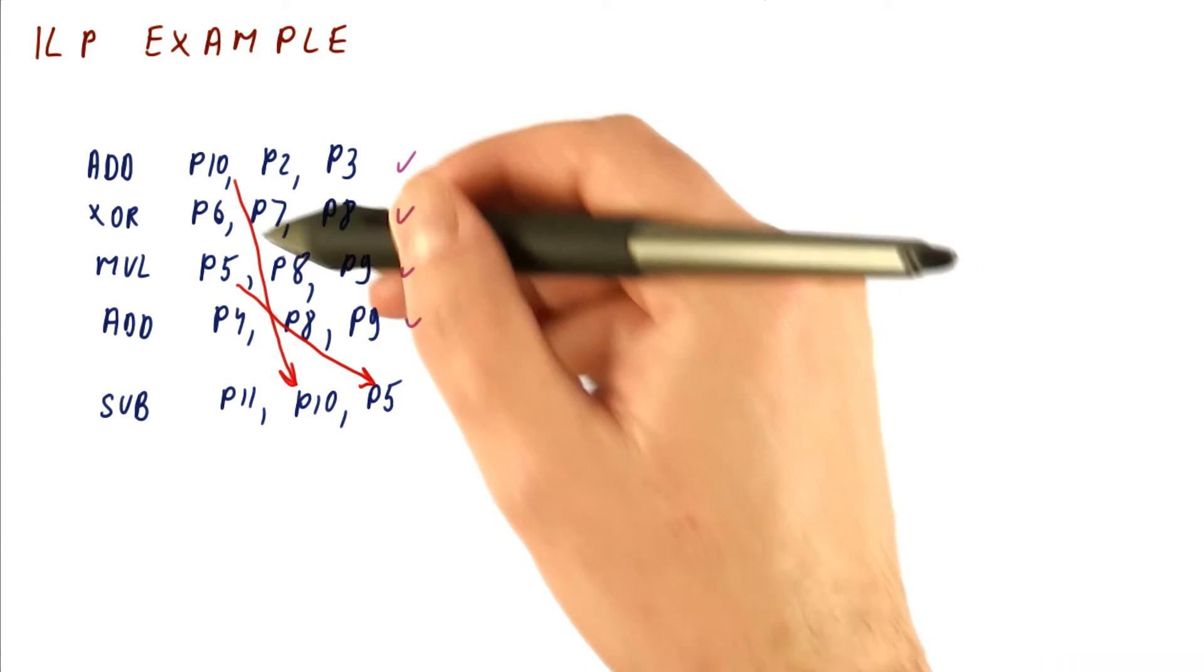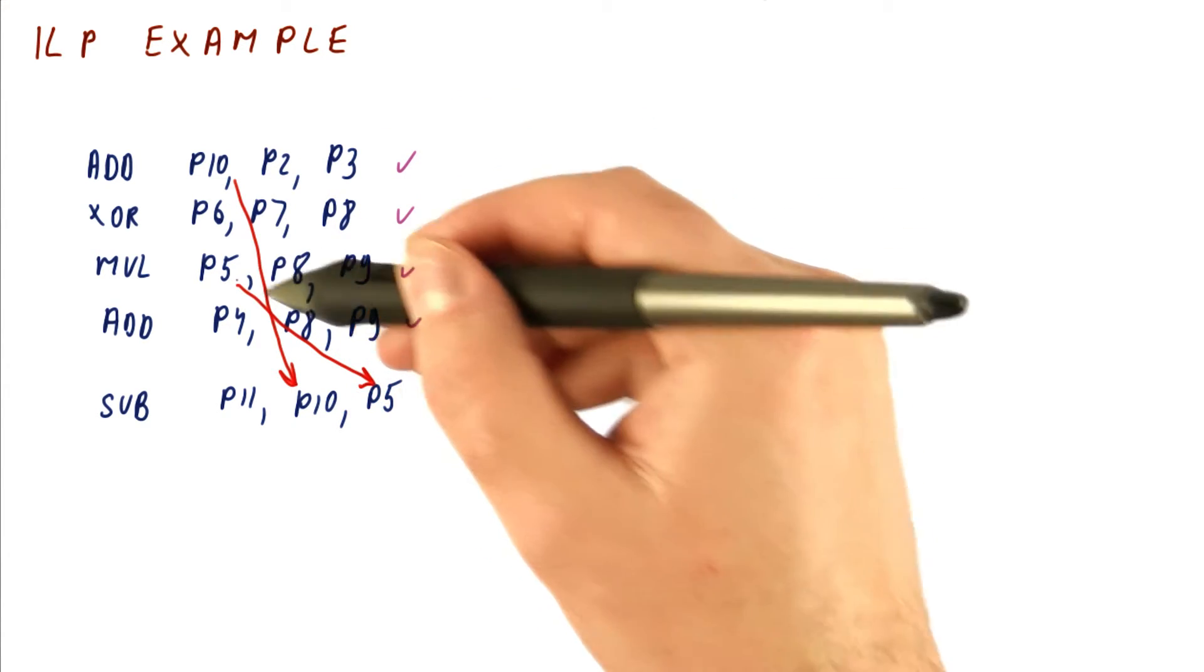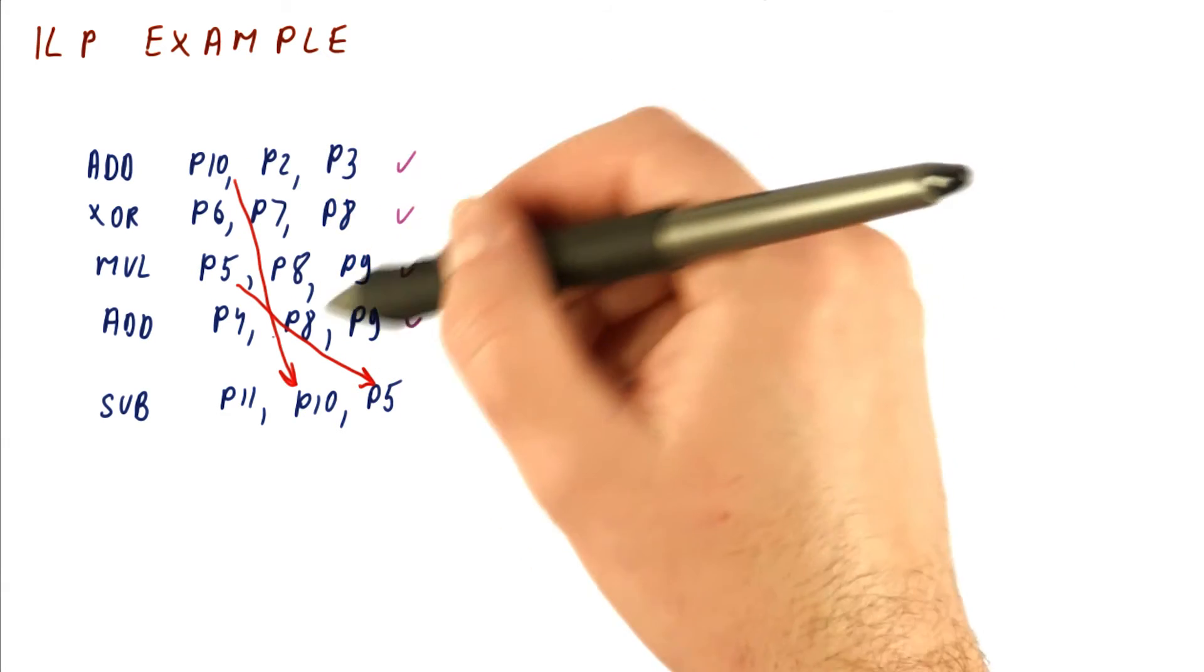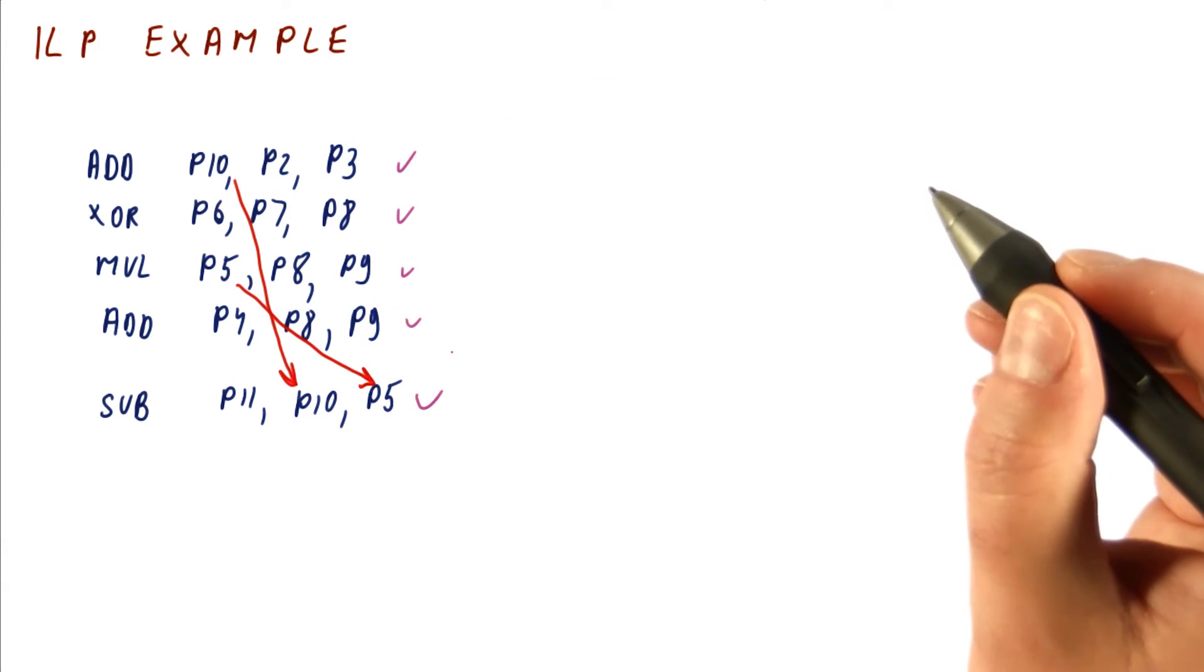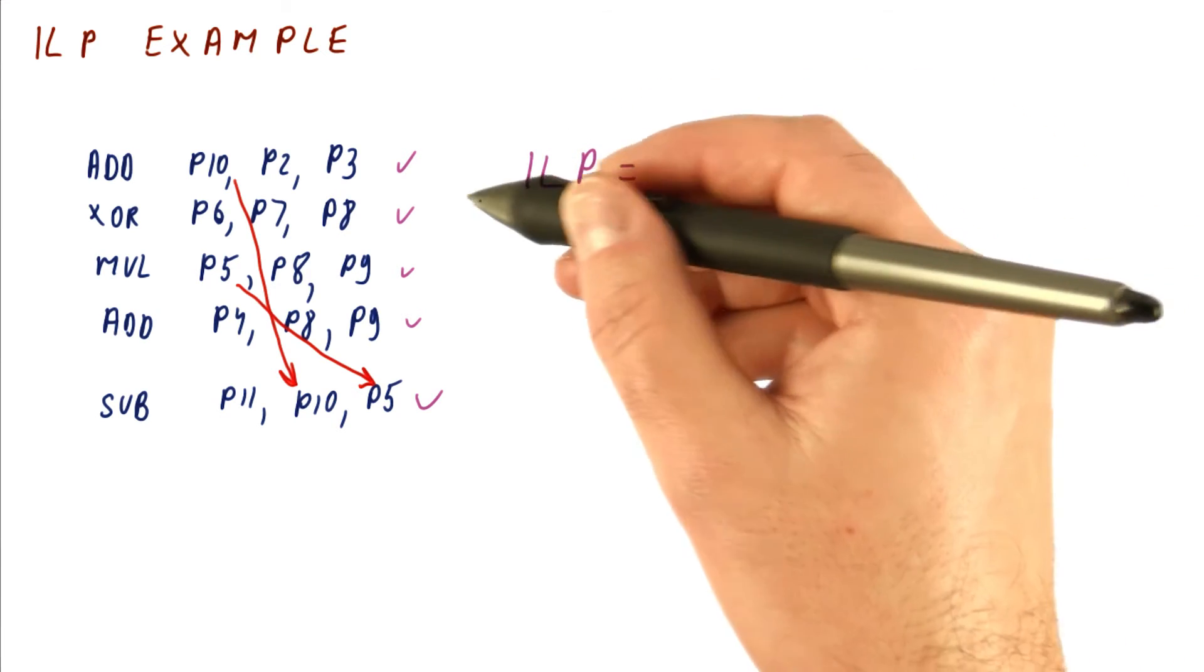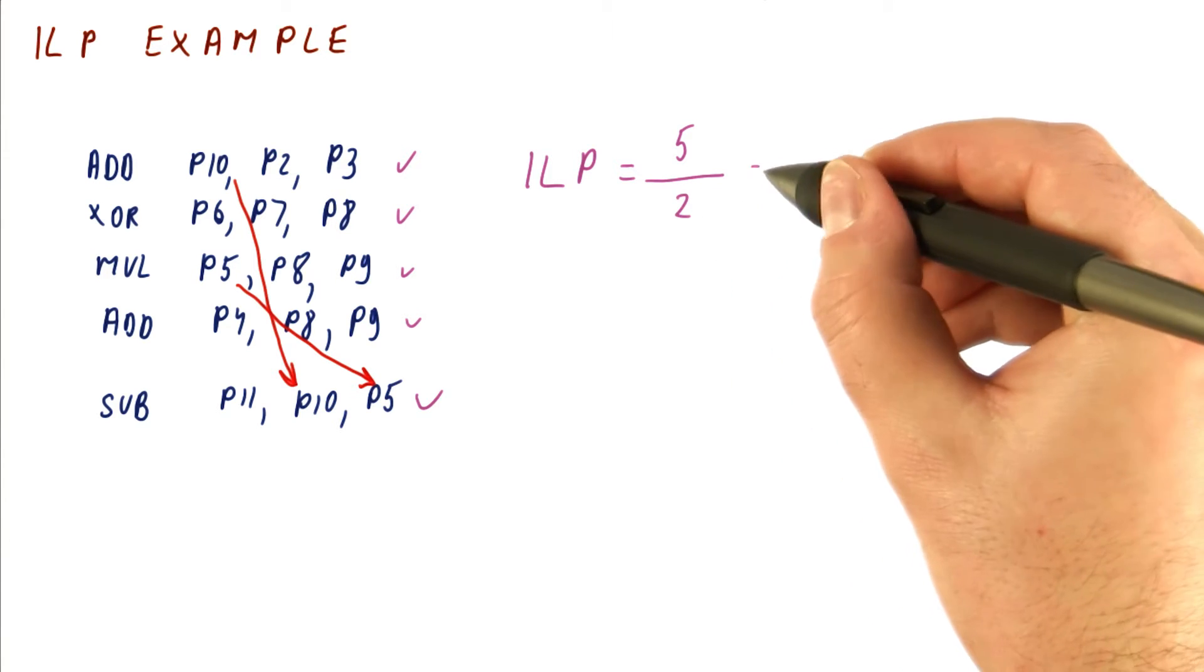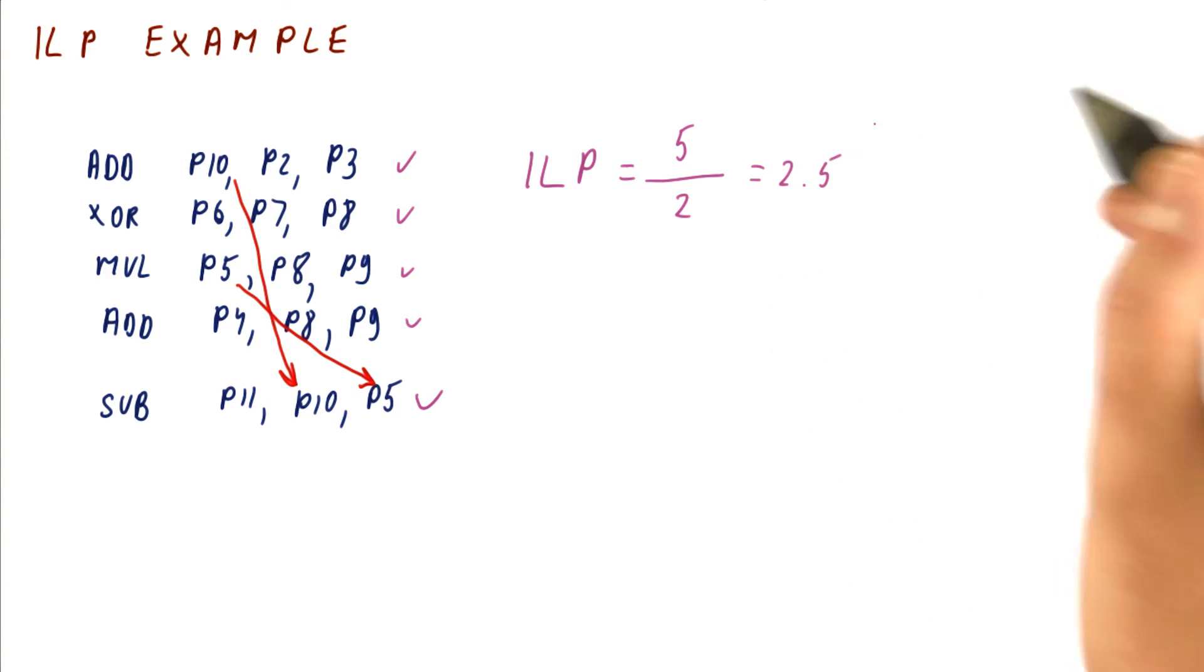In the second cycle, this one cannot be done in the first cycle because it has a dependence from this and this, and that hasn't been done in the first cycle yet. So after the first cycle, all of these are done, so now we can do this. So what we get is the ILP equals how many instructions? Five, over how many cycles? Two. We got an ILP of 2.5.